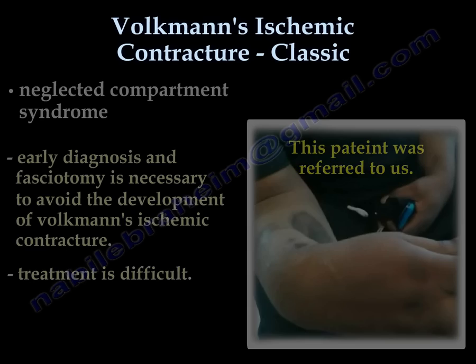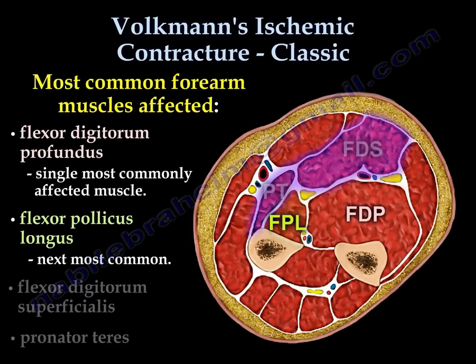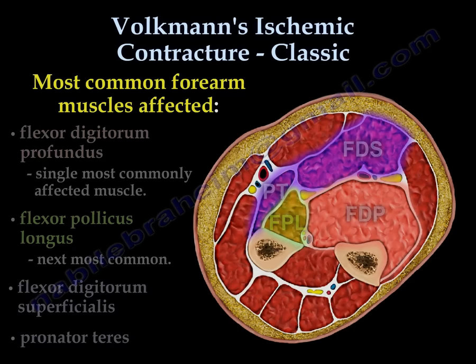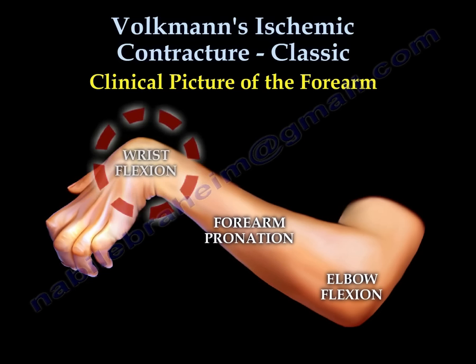The most commonly affected forearm muscles are the flexor digitorum profundus — the single most commonly affected muscle — followed by the flexor pollicis longus. The flexor digitorum superficialis and pronator teres are also affected.